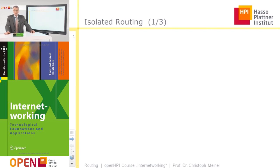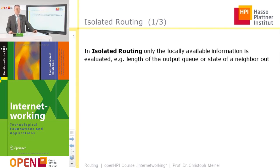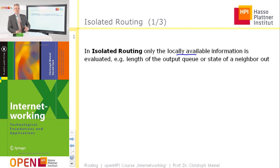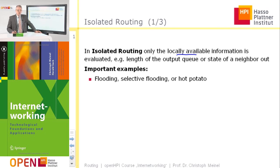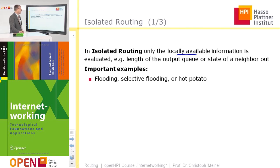To get a better understanding of routing algorithms, let's have a closer look at a few of them, starting with isolated routing. Isolated routing is a very simple routing algorithm based only on locally available information — information of the router about its output gates, input gates, length of queues, or state of neighbors. An important example of isolated routing algorithms is flooding, and more sophisticated, selective flooding. A third example is the so-called hot potato routing.